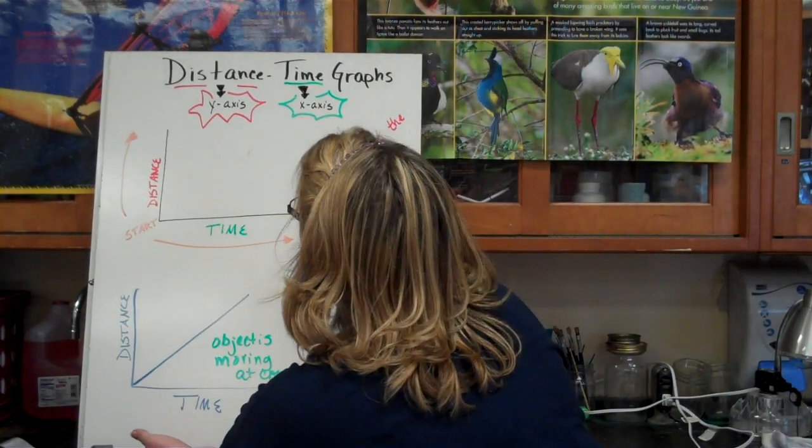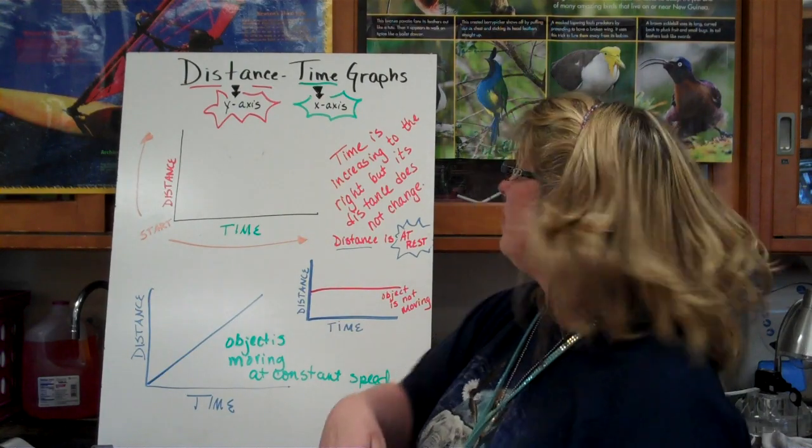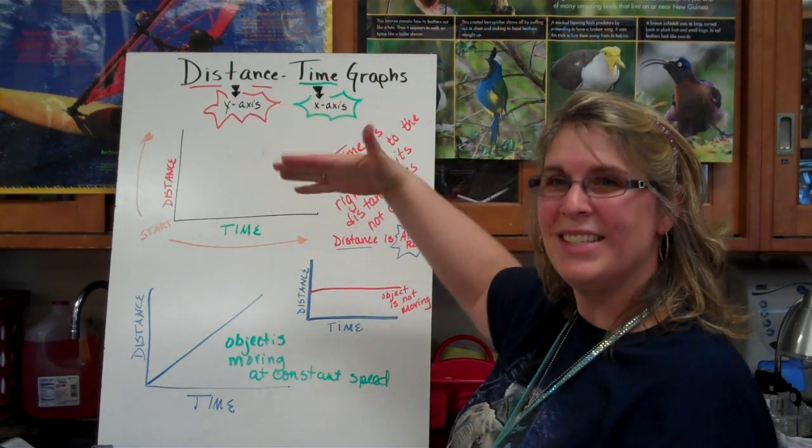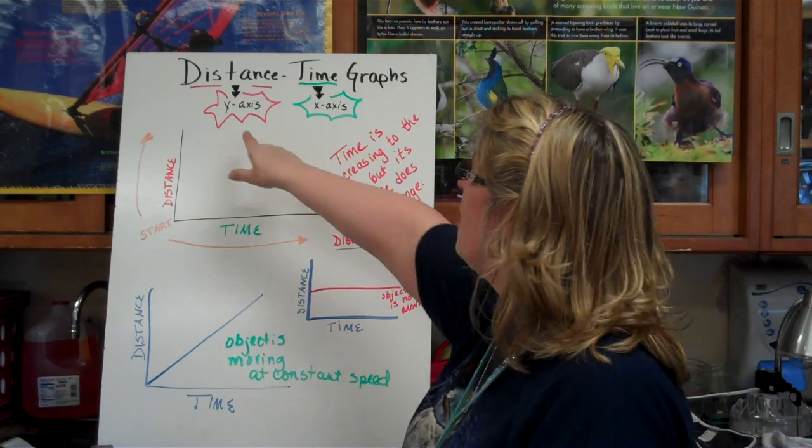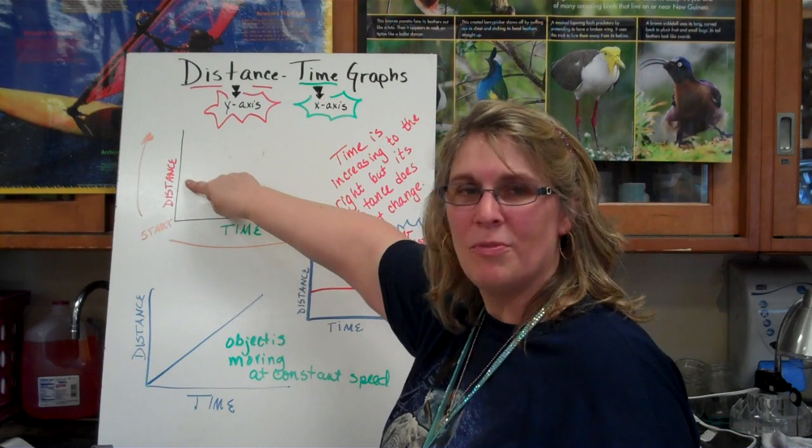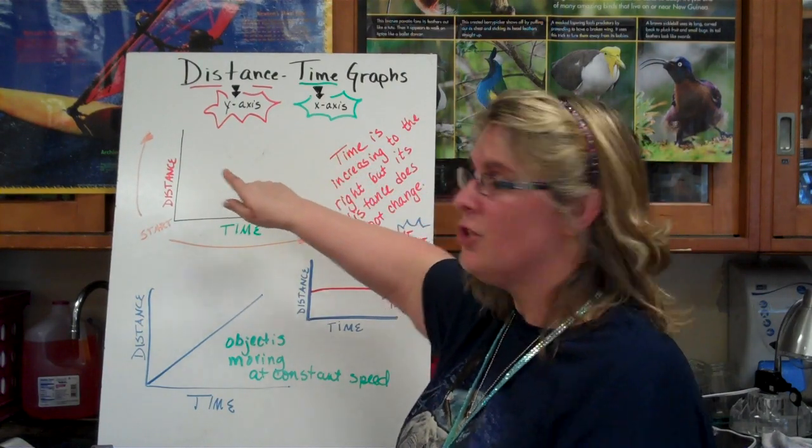Now, once we have that information, we're going to be graphing the information. When we have distance and time, distance or time graphs, the distance always goes on the y axis. You know this from math class. Mr. Atkins has taught you this. Or probably other teachers in years past. And time always goes on the x axis.